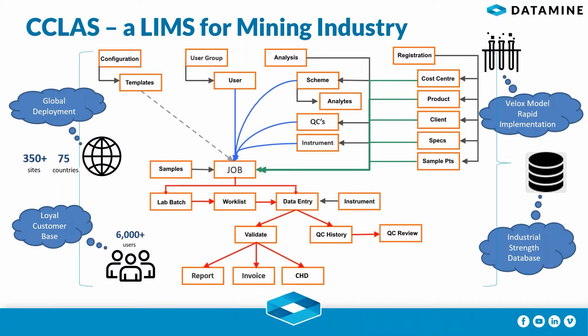C-Class runs on SQL databases, which provide industrial-strength database technology, so it can handle hundreds of thousands of samples per year. This means all C-Class operational data is stored in a well-structured database that can be easily interrogated by a third-party reporting tool such as Power BI. We can also integrate with third-party systems readily through the use of CHD.